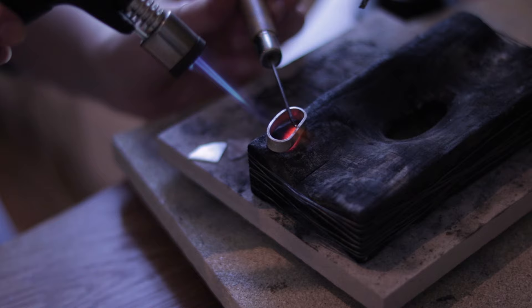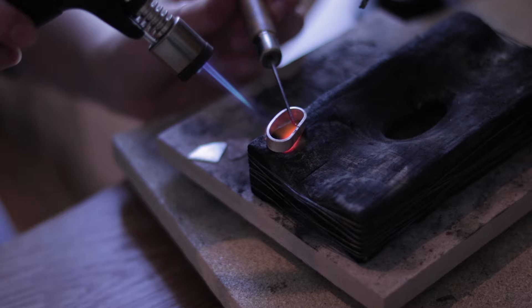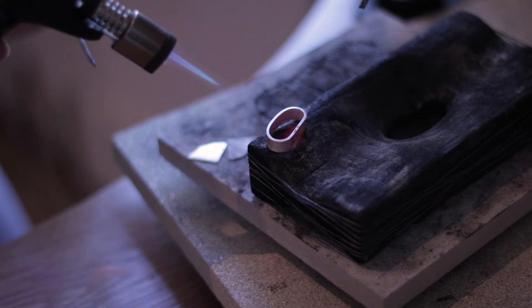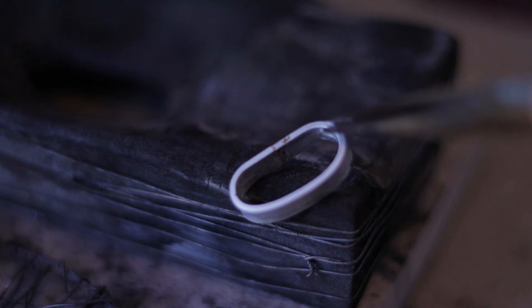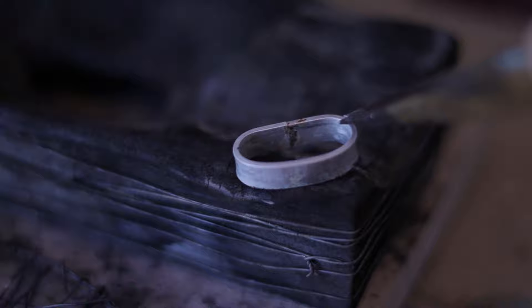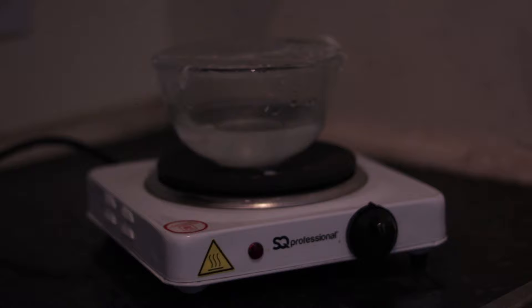When heating up the metal make sure that you heat it up evenly and that the ring is bringing up to nice high temperature but make sure that you don't overheat it. As soon as the solder has flown make sure you turn off the flame because now there's no need for you to keep heating up the metal. And now you can quench it and then it's time to put it in the pickle.